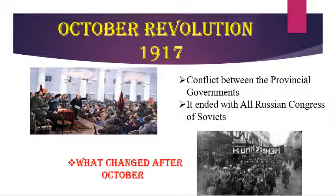Trade unions were kept under party vigilance. Many Bolshevik followers became disillusioned by the way the party functioned. These were the changes that occurred after the October Revolution 1917.